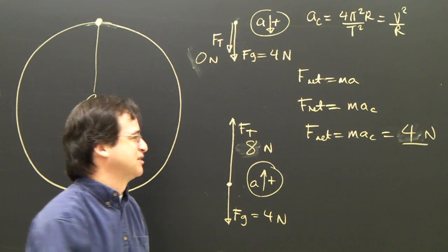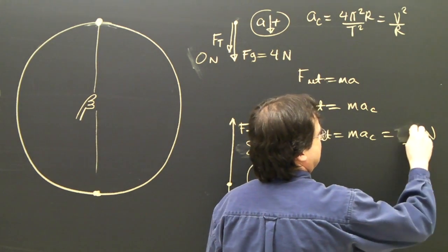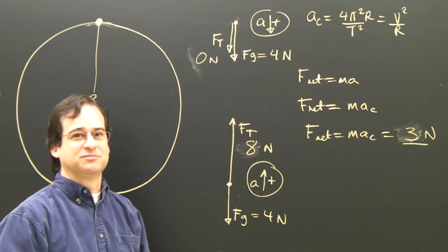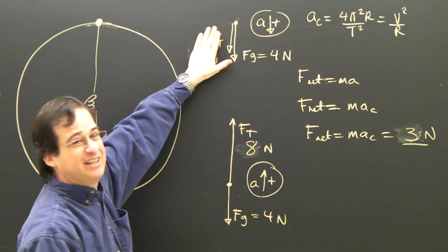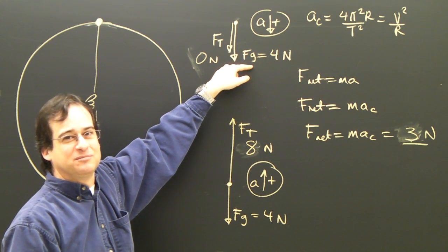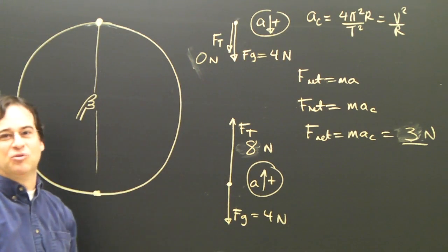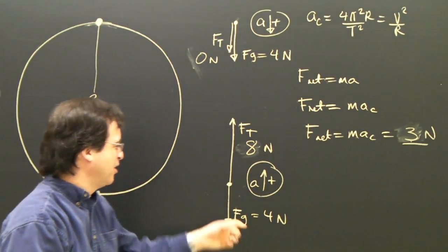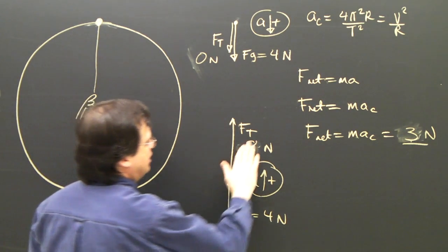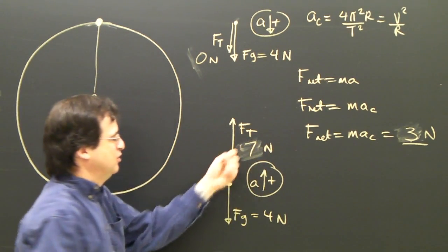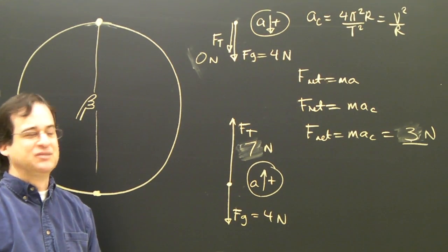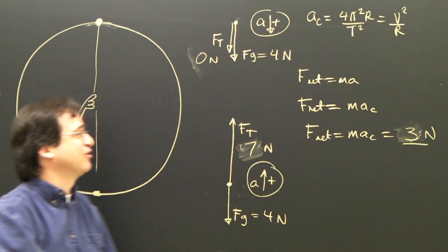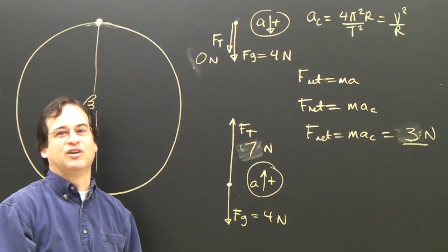Let's say I go even a little bit slower and the centripetal force I need is only 3 newtons. At the top, gravity supplies 4 newtons but I only need 3 — I have too much force towards the center and the tension can't go negative. That means the object won't continue going in a circle; if it's a bucket of water, the water will fall out. At the bottom, I'd need 7 newtons of tension up against 4 newtons of gravity to get my 3 newtons net. This is an overview of centripetal force — check the next video for calculated problems.